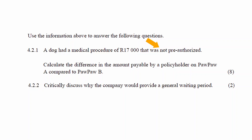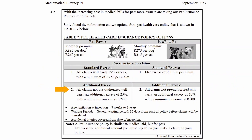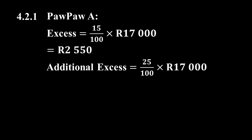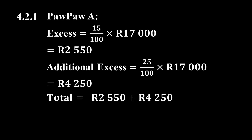Because the claim was not pre-authorized, it carries an additional excess of 25%. The additional excess cost is 25 divided by 100 multiplied by 17,000 rand, which equals 4,250 rand. So the total amount payable for Paw Paw A is 2,550 rand plus 4,250 rand, which equals 6,800 rand.